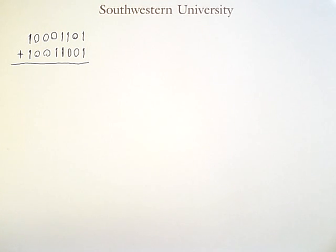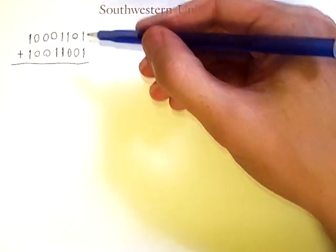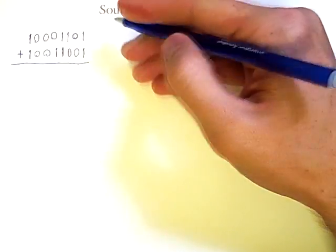Because computers work with binary numbers, they need to be able to perform arithmetic operations on binary numbers. For example, we may want to add these two binary numbers.